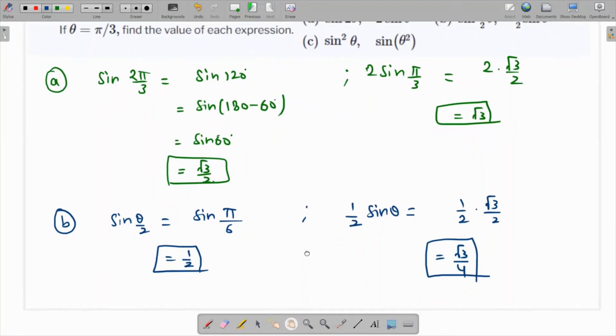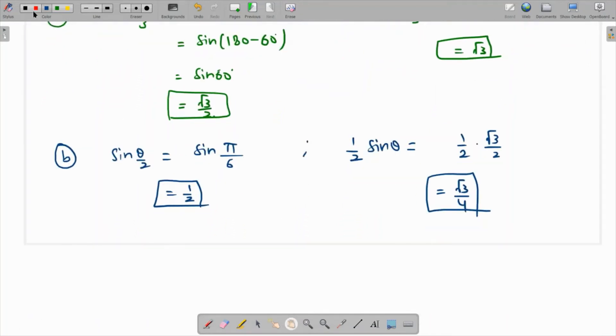The last one is sine square theta. So let's - I'll take another ink. Sine squared π/3 is nothing but (√3/2)², which is nothing but 3/4.